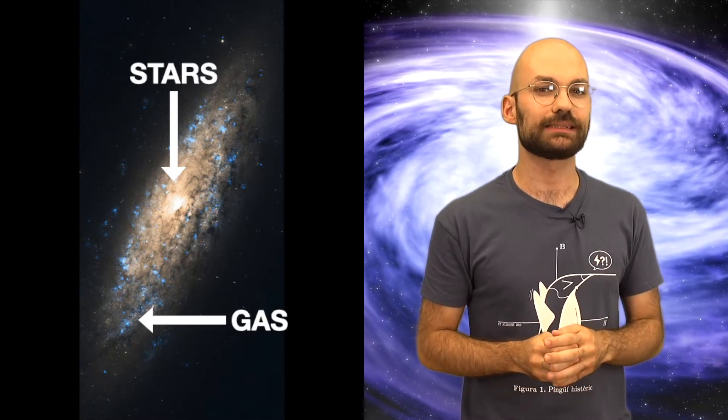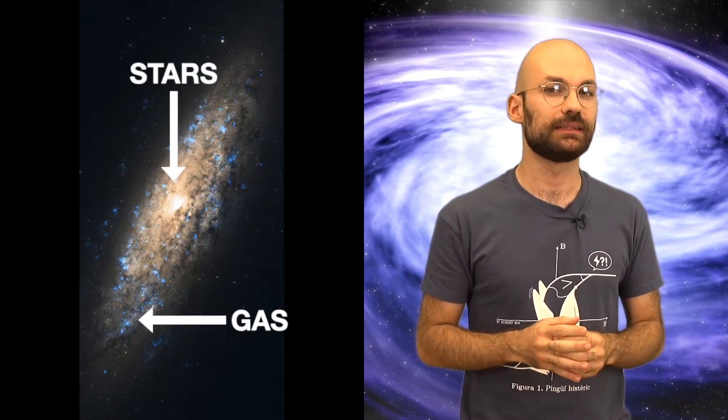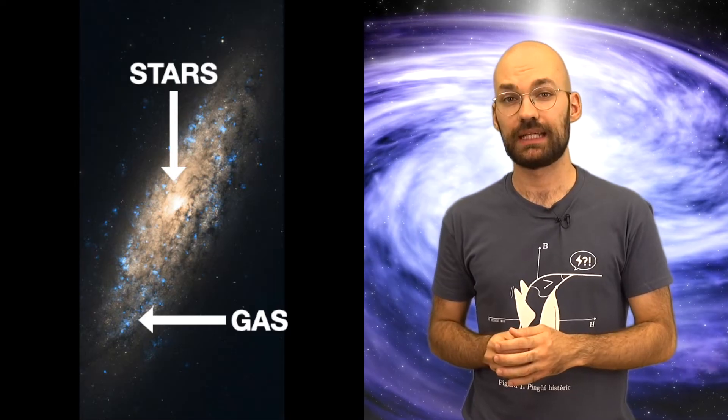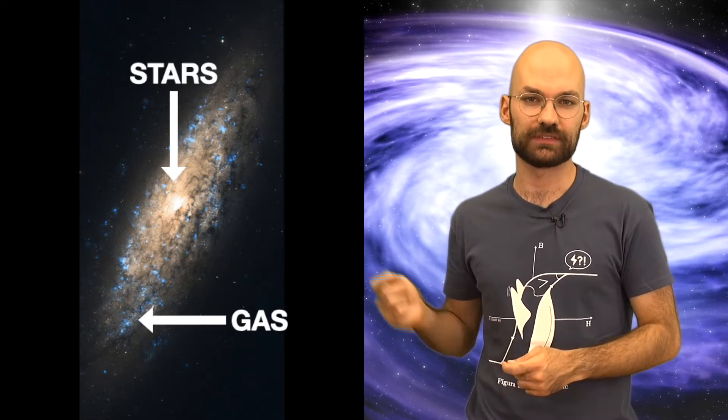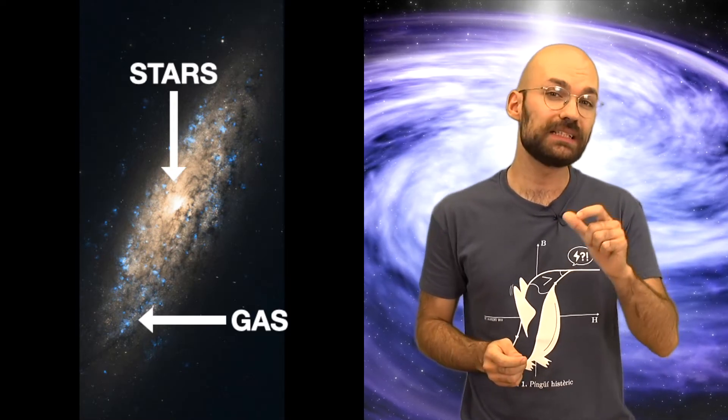It looks clear that the galaxy is brighter in the center than in its surroundings. This leads us to think that the stars concentrate at the center of the galaxy, and that there is a bit more gas in the outskirts of the disk.